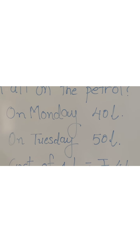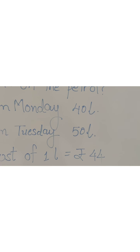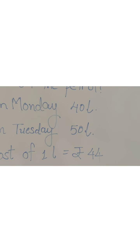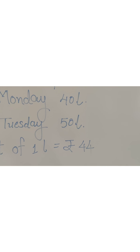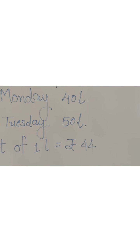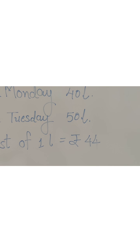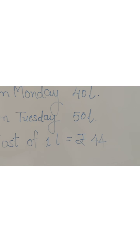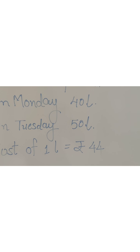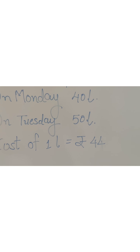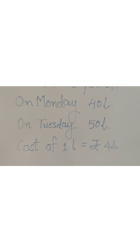Suppose on Monday you bought 2 chocolates at ₹5 each — Monday's total is ₹10. And on Tuesday you bought 3 chocolates at ₹10 each — Tuesday's total is ₹30. So combining both days, you spent ₹40. Similarly, you have to solve this sum.